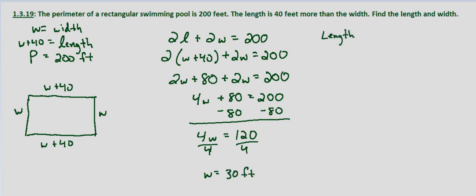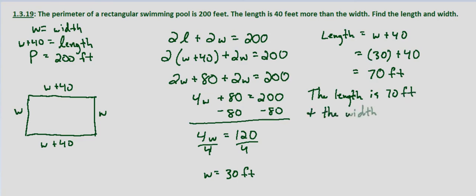So that means the length equals the width plus 40, which equals 30 plus 40, which equals 70 feet. So the length is 70 feet and the width is 30 feet.